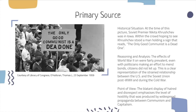Our second primary source is a picture taken on September 23, 1969. Historical situation: at the time, Soviet Premier Nikita Khrushchev was in Iowa. Within the crowd hoping to see Khrushchev stood a man holding a sign that reads, 'The only good communist is a dead one.' Reasoning and analysis: the effects of World War II were fairly prevalent — even with politicians making an effort to mend bonds, citizens did not let up. This is a clear representation of the strained relationship between the US and the Soviet Union post-World War II and during the Cold War. Point of view: the blatant display of hatred and disrespect emphasizes the level of hostility produced by widespread propaganda between communism and capitalism.